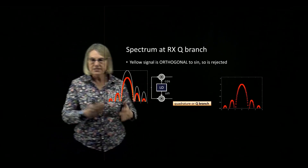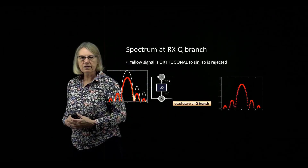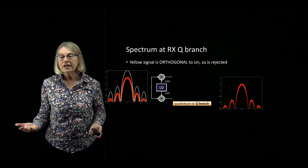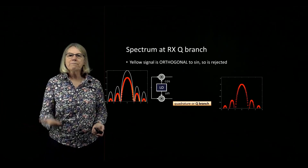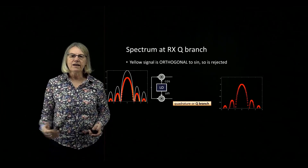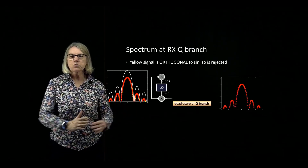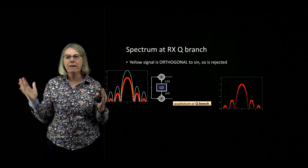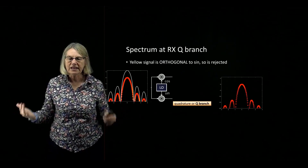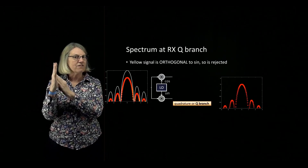The same thing happens in the quadrature branch. When the white total spectrum hits the sine, the sine is orthogonal to the cosine, so the yellow portion of the spectrum is rejected and zeroed out. What's left is purely the red quadrature information. This utilization of cosine and sine at both the transmitter and receiver permits an independent ordered pair that can be easily separated, even though they're transmitted together on the same spectrum.